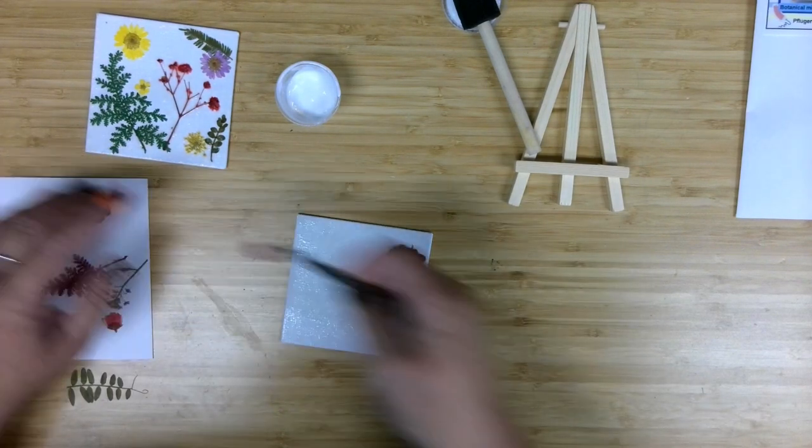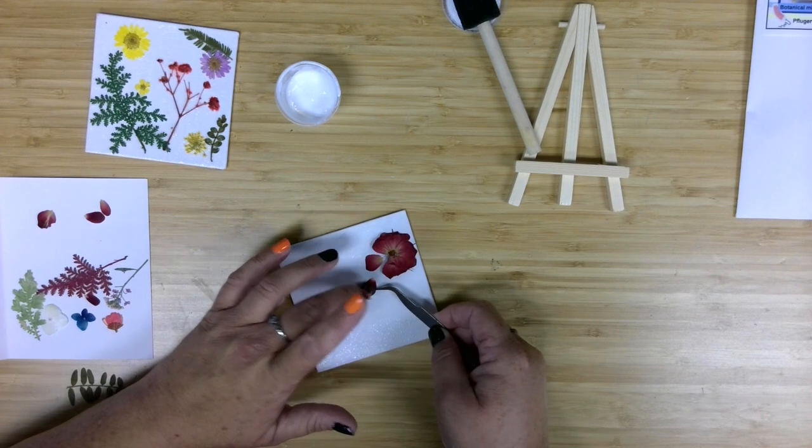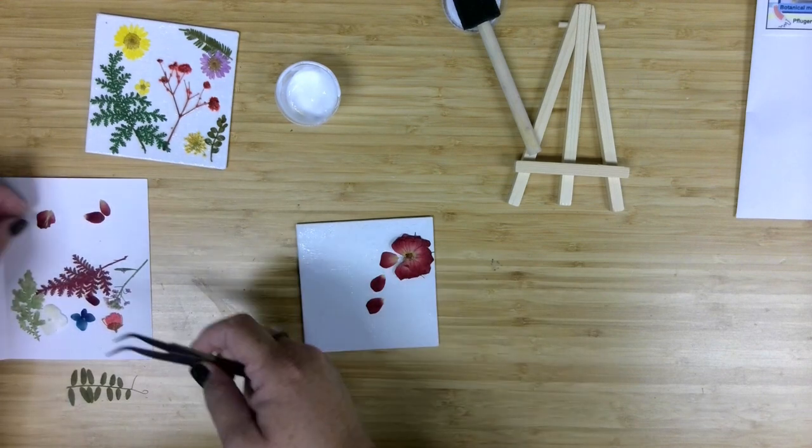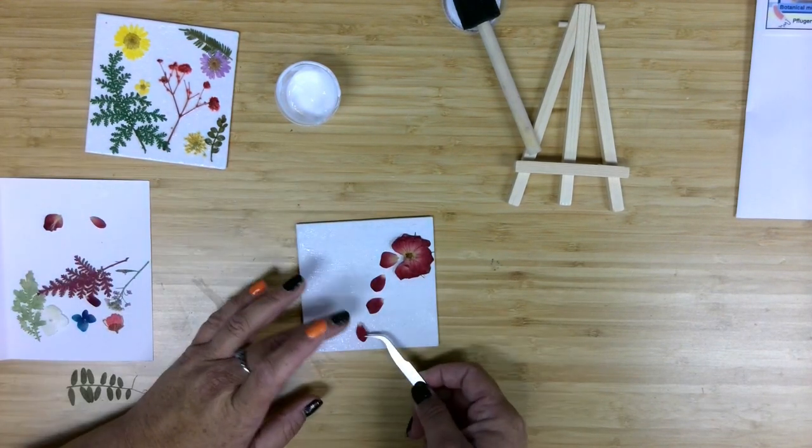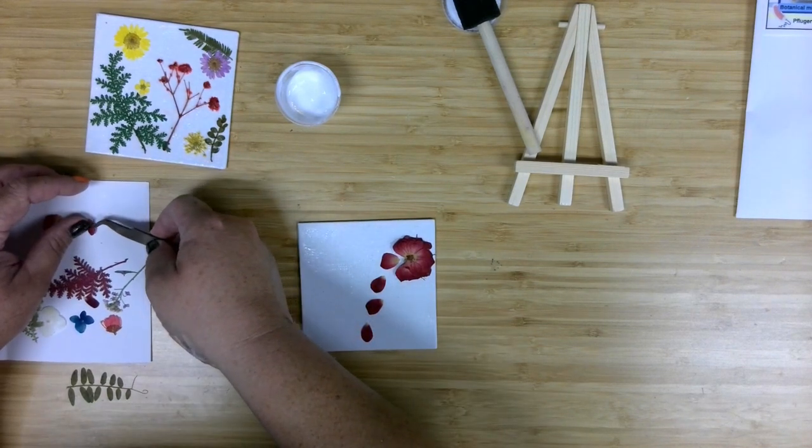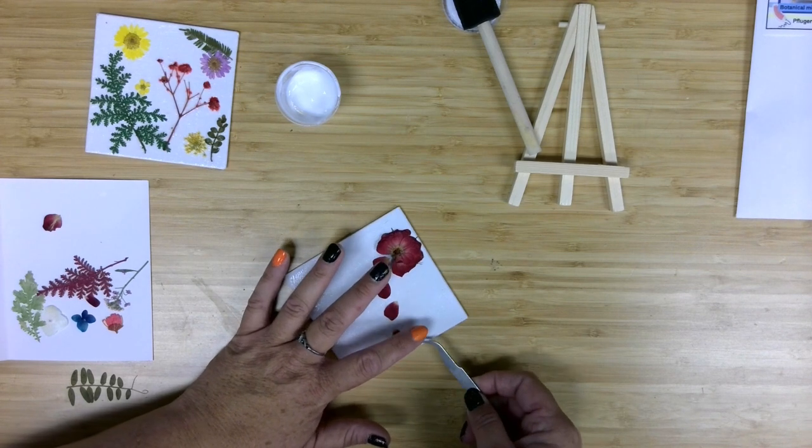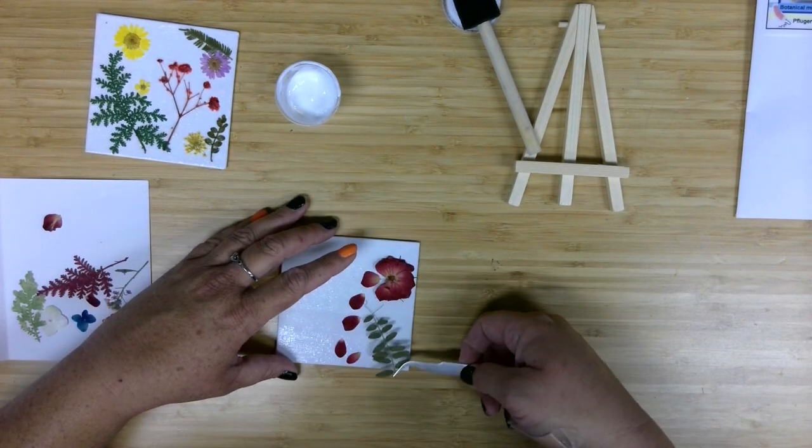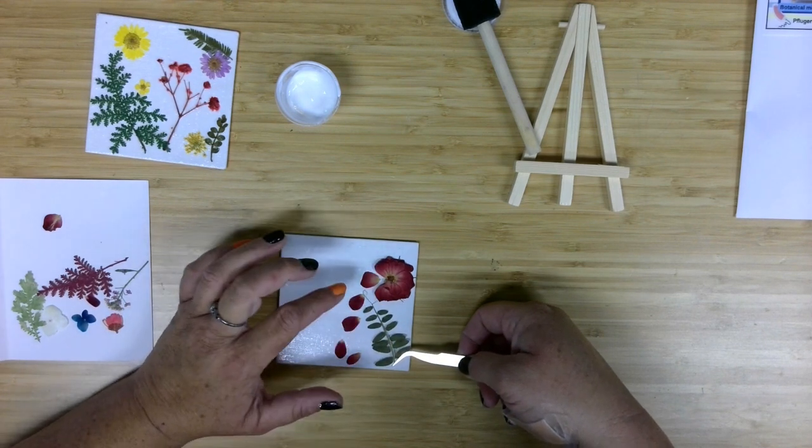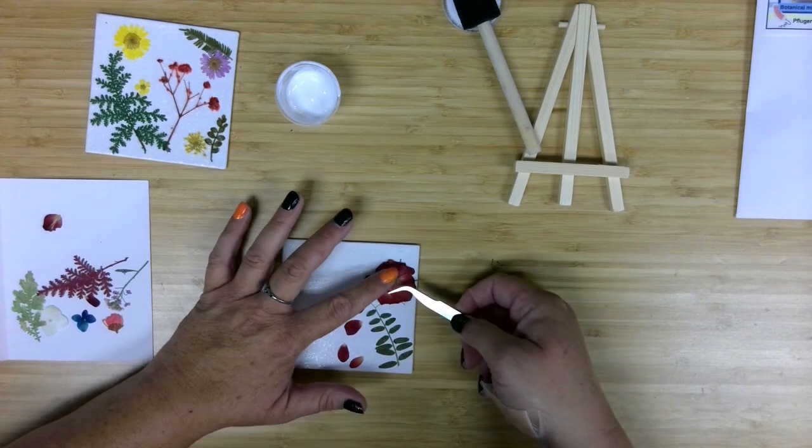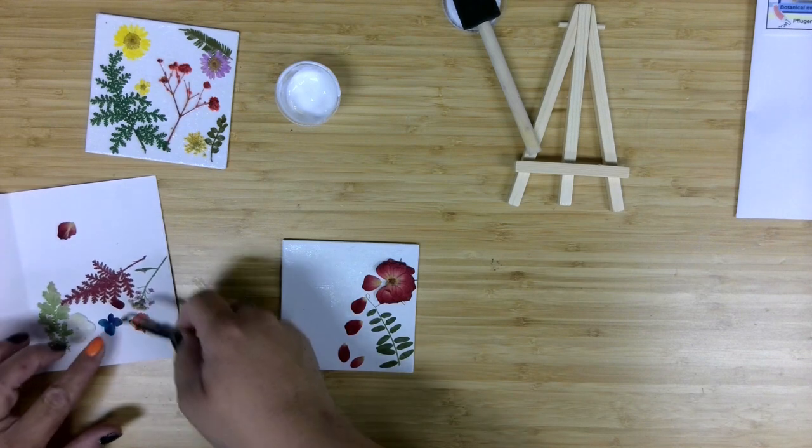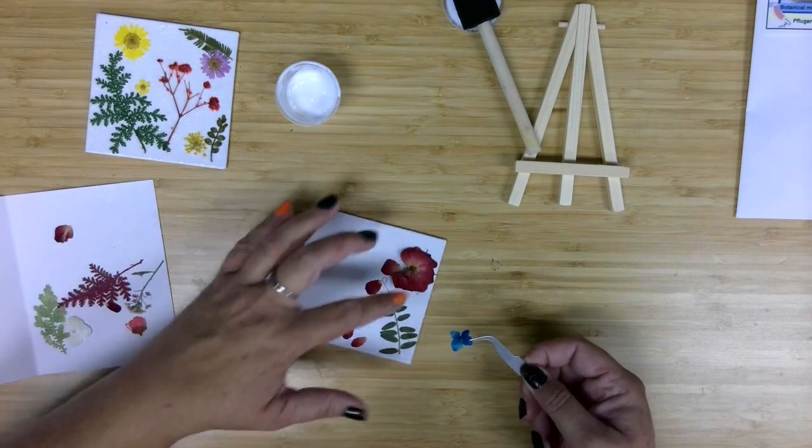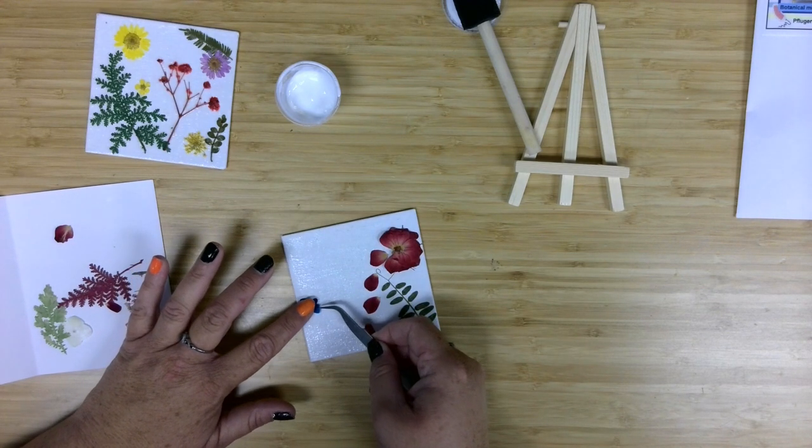You remember the Beauty and the Beast movie when the rose petals start falling? Notice, oh where'd my other petal go? It's still stuck to my finger. Here's my other. And I want to use some greenery below here. I'm going to slide this under just a smidge so I still have that curl on the top.